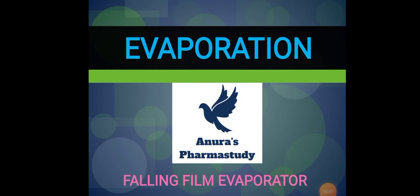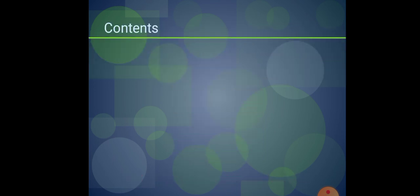Hello friends, welcome to Anuraj Pharma Study. In this video we will discuss about falling film evaporator. Evaporation is the vaporization of large quantity of solution to get a concentrated product, and evaporators are the equipments used to perform evaporation in pharmaceutical industries. In previous videos we discussed pan evaporator, multiple effect evaporator, and economy of multiple effect evaporator.